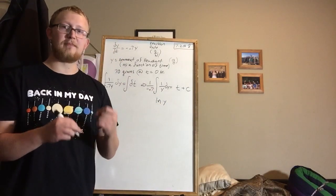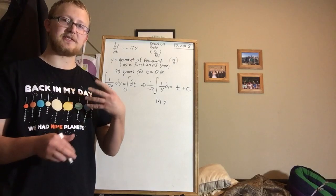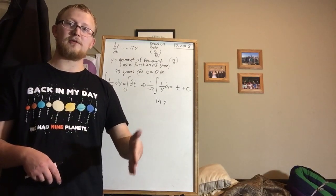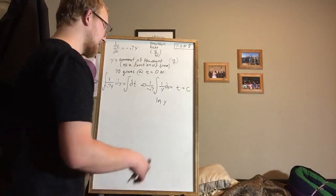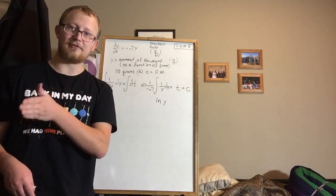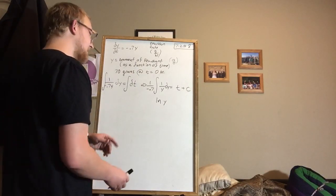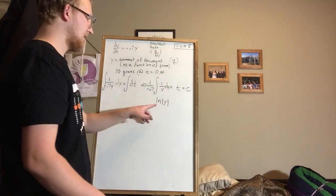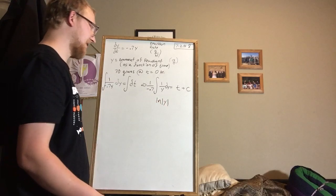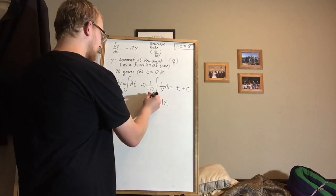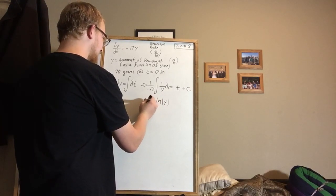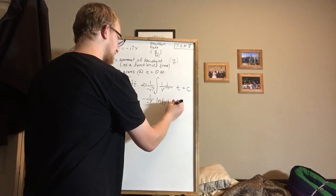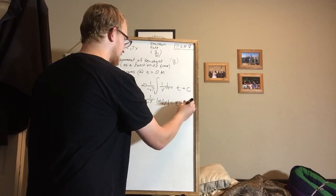But because y must be a positive number, because natural log isn't defined from 0 to negative infinity, the integral of 1 over y must be the natural log of the absolute value of y. And we're still left with negative 1 over 0.7 outside of the natural log. And that's equal to t plus c.